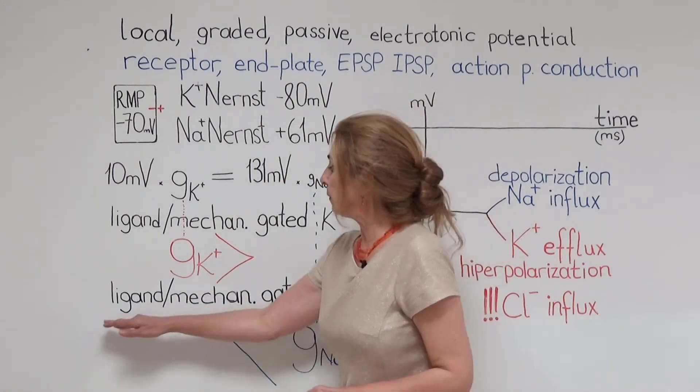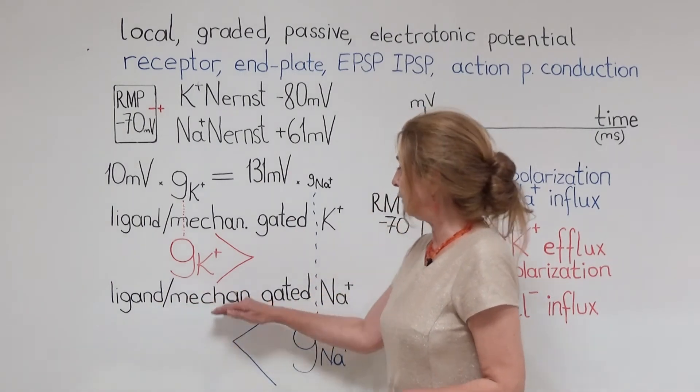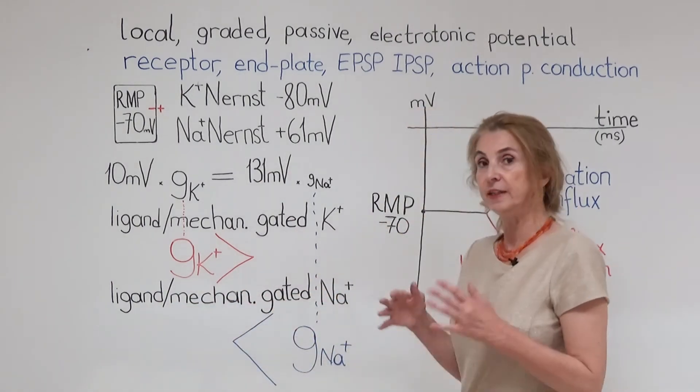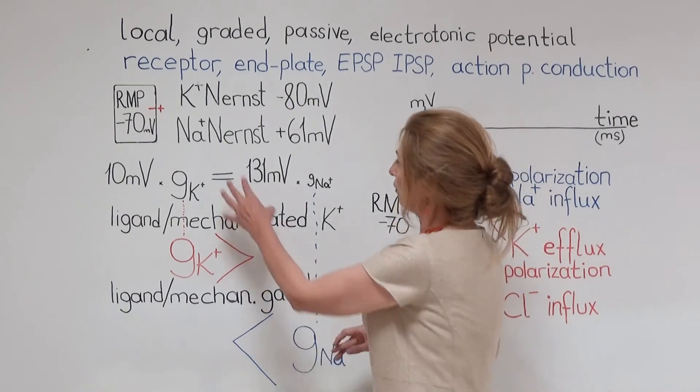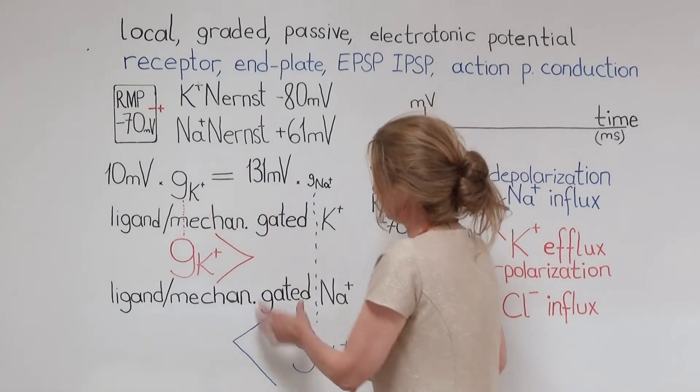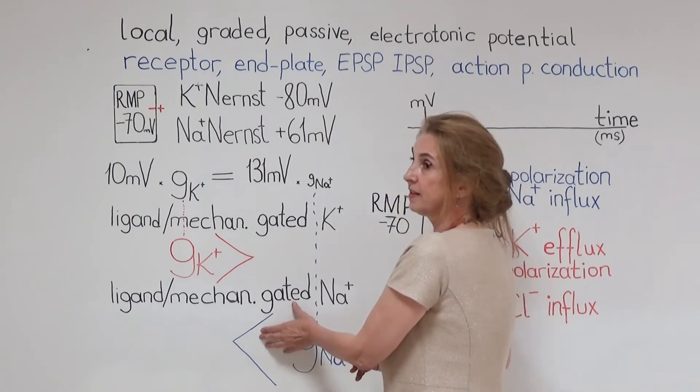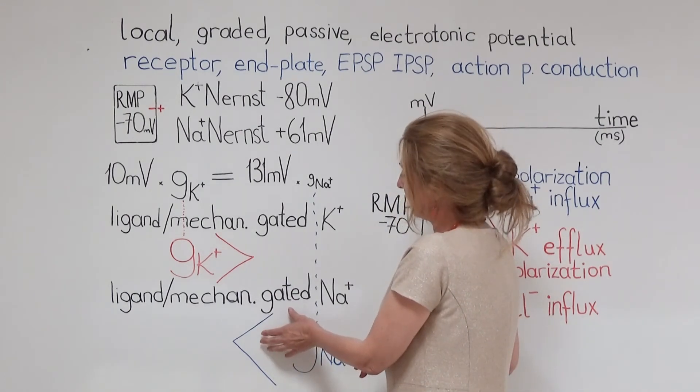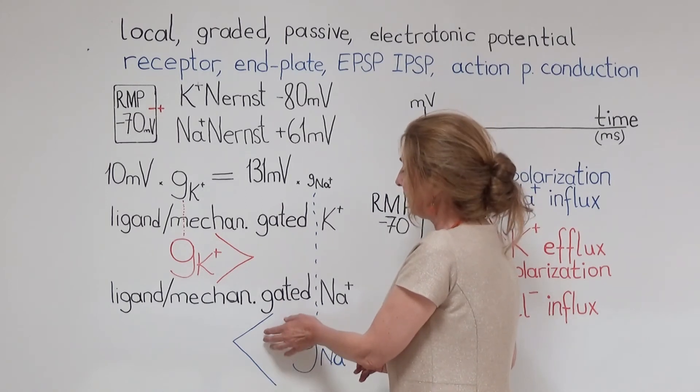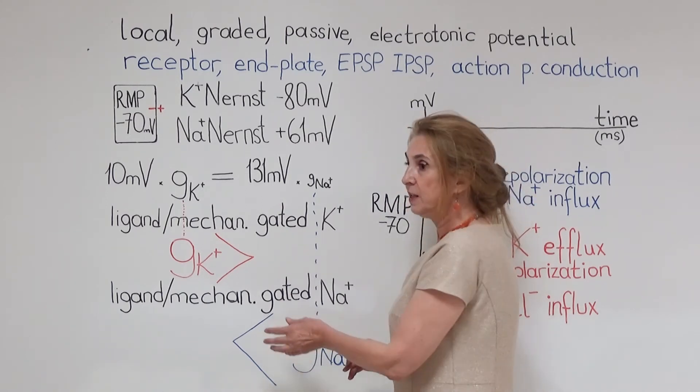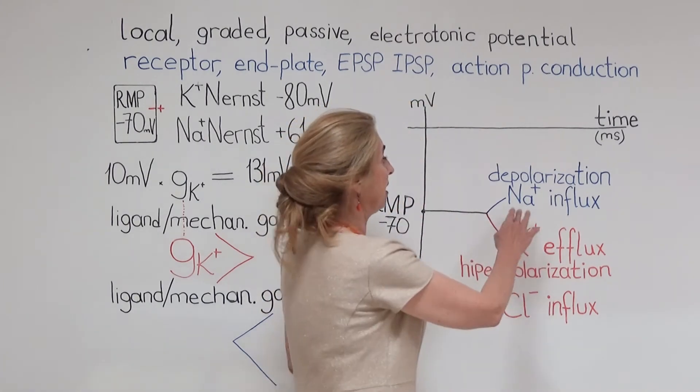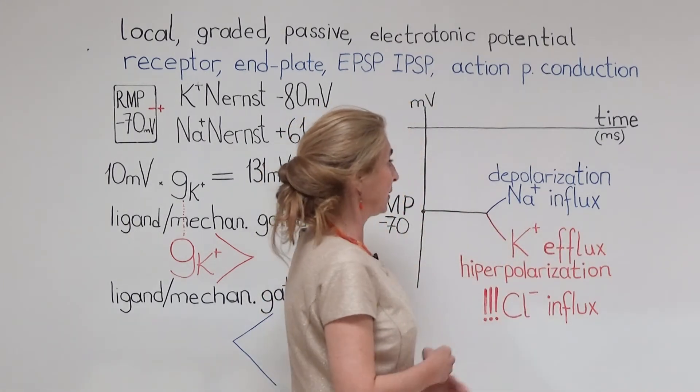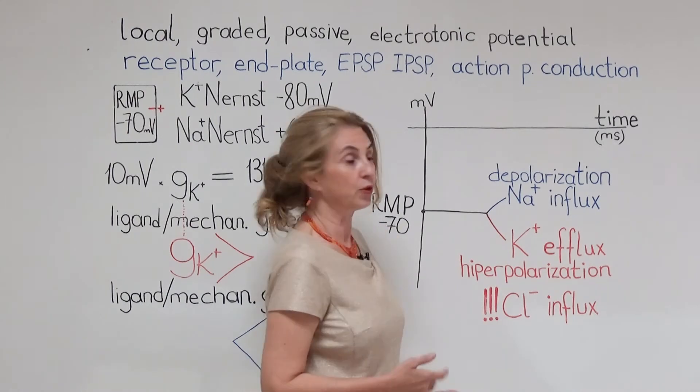Another local potential type can be produced by the opening of ligand or mechanically gated sodium channels. This is now going to change the balance condition toward the sodium influx. Sodium influx is going to become more important, and there will be a net input of positive charges to the cell.